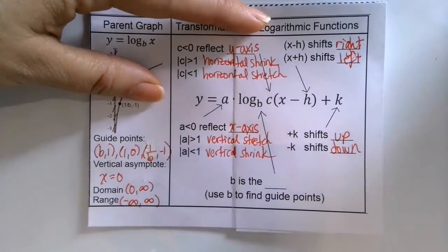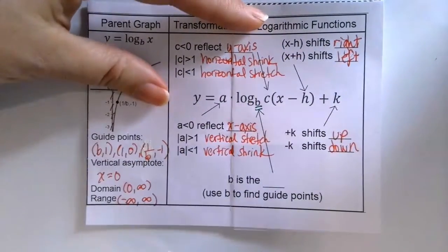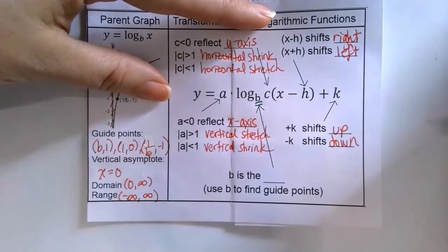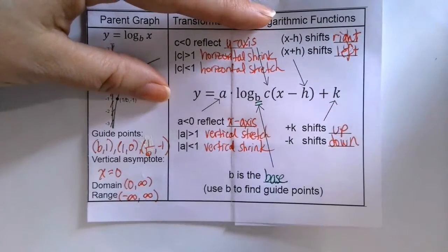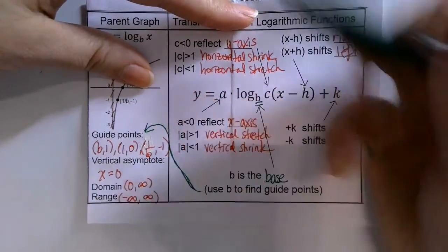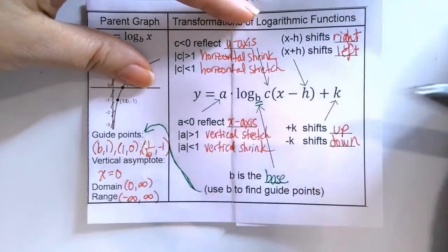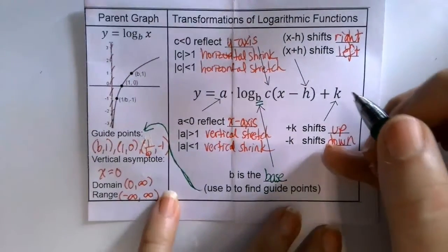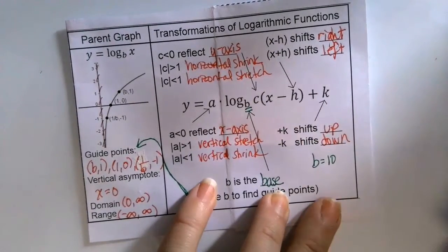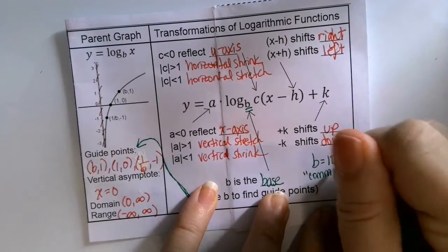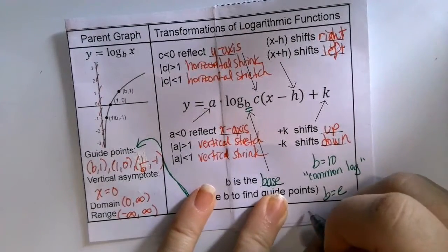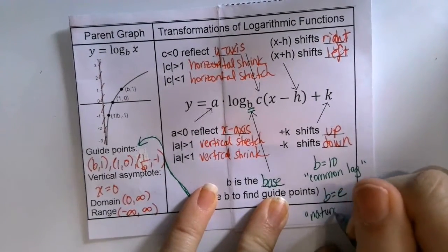The thing that's different about the exponential is also different about the logarithm: the b, which is the base. Our transcendental functions — exponential and log — have a b used to identify the three guide points: the x-intercept at (1, 0), the point (b, 1), and (1/b, negative 1). Special cases: when your base is 10, that's called a common log; when your base is e, that's called a natural log.